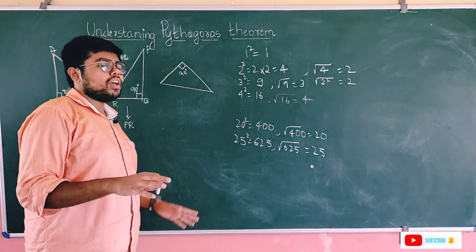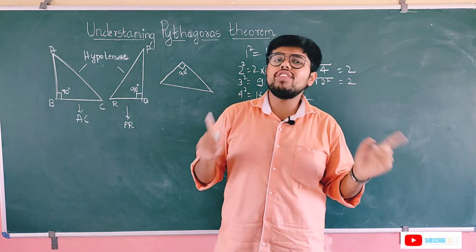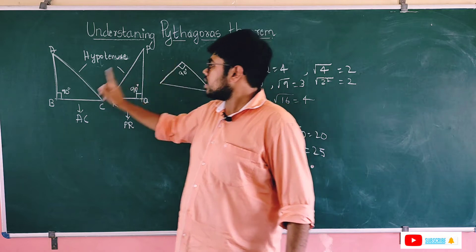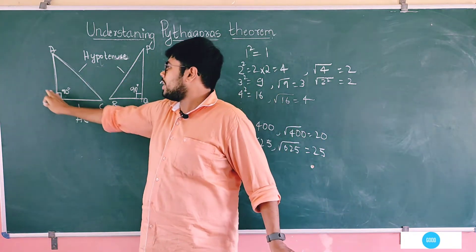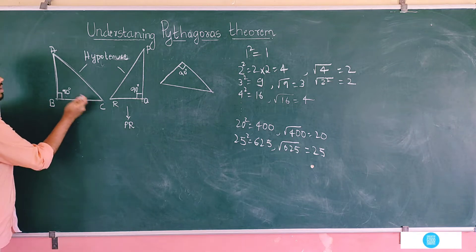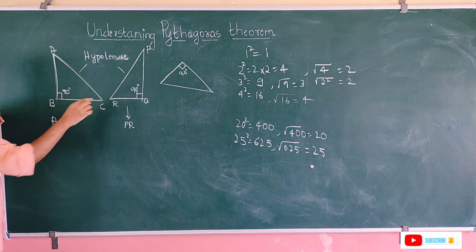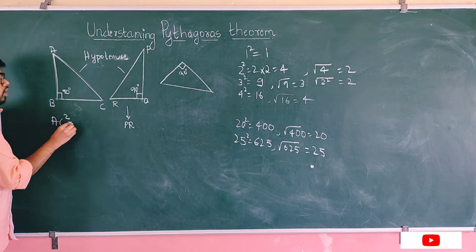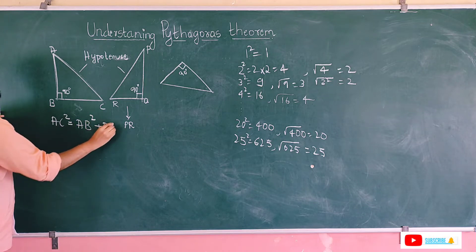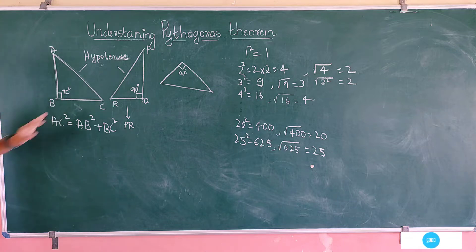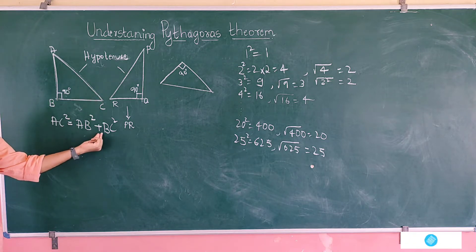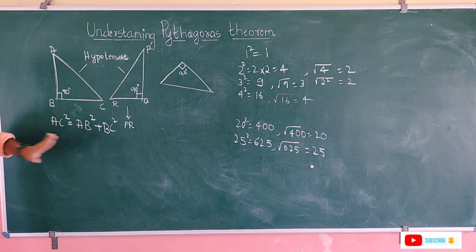The Pythagoras theorem states that the square of the hypotenuse is equal to the sum of the squares of the other two sides. For a triangle ABC where AC is the hypotenuse: AC² = AB² + BC². If I label the sides as lengths c (hypotenuse), a and b, then c² = a² + b². This is the Pythagoras theorem.